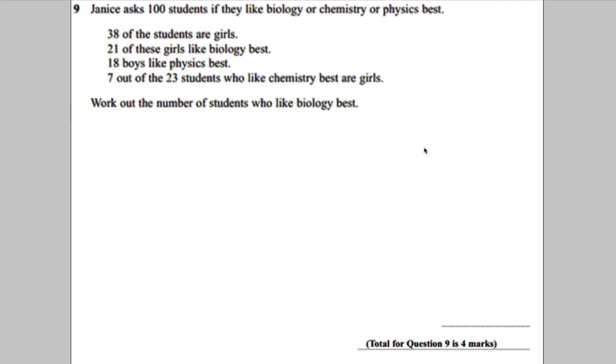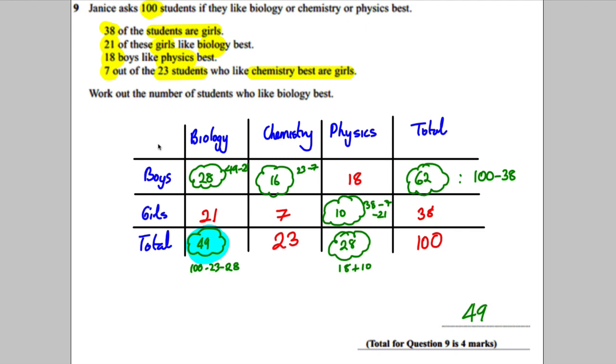Here was my answer. I drew a two-way table with biology, chemistry and physics along the top and total boys, girls and total. In red is everything that came straight from the question and in green is everything that I had to work out. We are asked the number of students who like biology best. I got 49 as my answer.